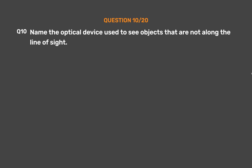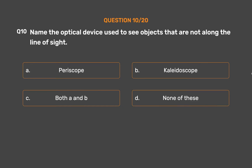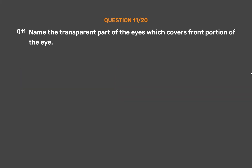Question number 10: Name the optical device used to see objects that are not along the line of sight. Option A: Periscope. Option B: Kaleidoscope. Option C: Both A and B. Option D: None of these. The correct answer is Option A, Periscope. A periscope is the optical device used to see objects that are not along the line of sight.